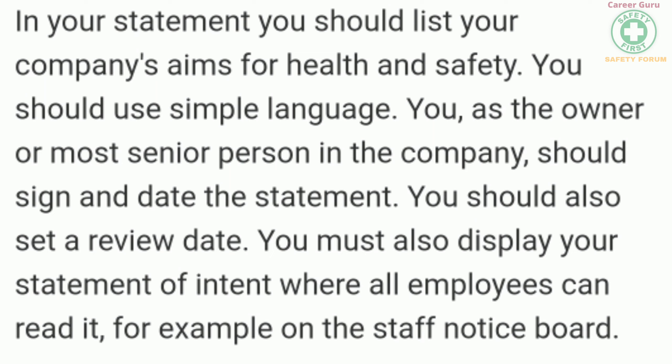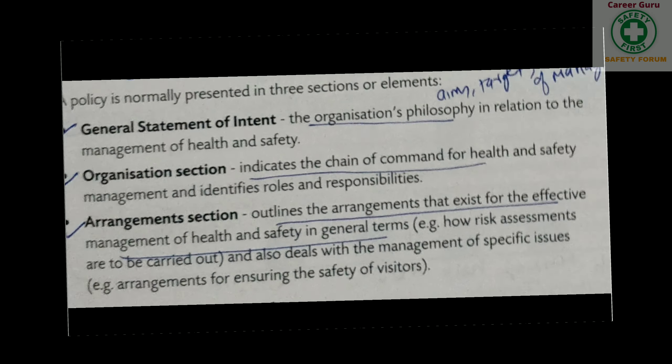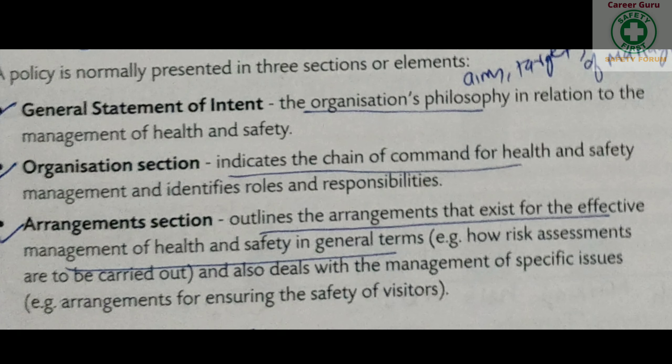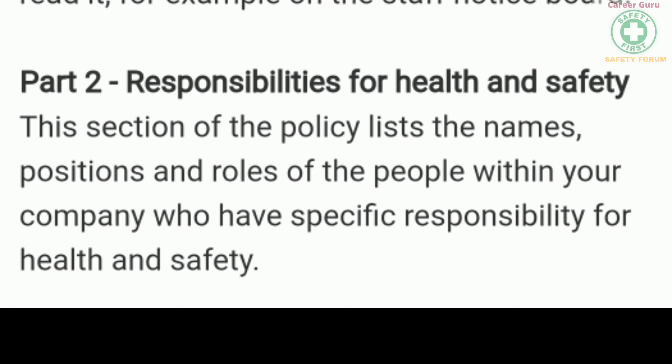The second section is the organization section. This section indicates the chain of command for health and safety management and identifies roles and responsibilities. Basically, this section of the policy lists the names, positions, and roles of the people within your company who have specific responsibility for health and safety.